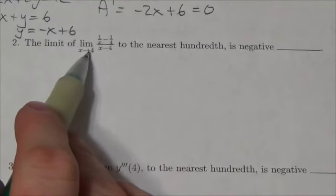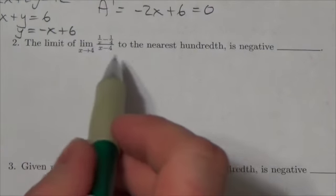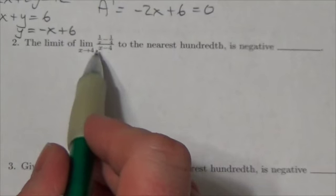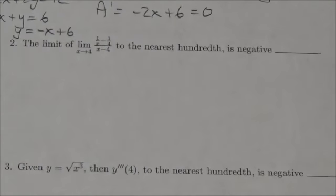Now you can see in the numerator here if you make x equal to 4, 1 quarter minus 1 quarter, so it goes to 0. And in the denominator, 4 minus 4 goes to 0, so this is definitely leading us to the indeterminate form.